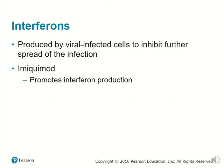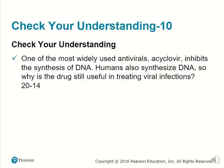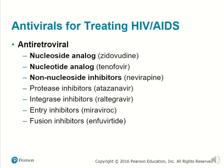Imiquimod is a substance that promotes interferon production. Antiviral agents for treating HIV or AIDS are antiretroviral because HIV is a retrovirus. These can have a variety of functions, such as preventing proteases or enzymes used for integrating, acting as entry inhibitors preventing entry into cells, or fusion inhibitors preventing fusion into cell parts. There are also those that interfere with the assembly and release of viral particles, such as protease inhibitors which block the cleavage of protein precursors before they become viral capsid coats. Exit inhibitors inhibit neuraminidases, an enzyme required for some viruses to bud out of a host cell.